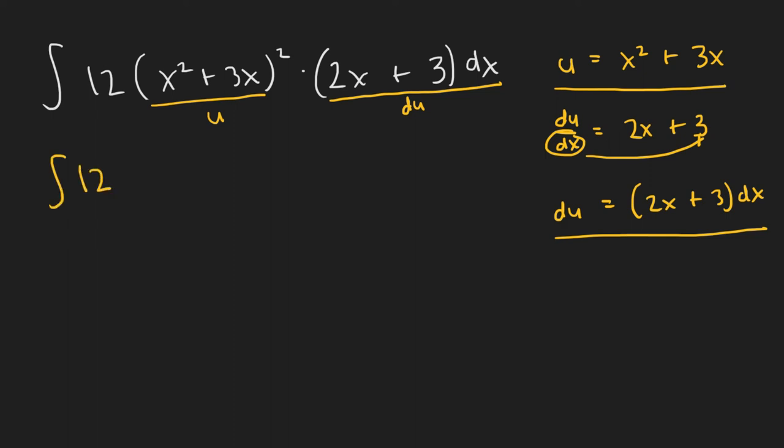So 12, and we plugged in, we know that this is u, so we just call this u. And actually, this entire thing is just du, so we can just write du right there. So we went from this big function down to this simple reverse power rule problem.